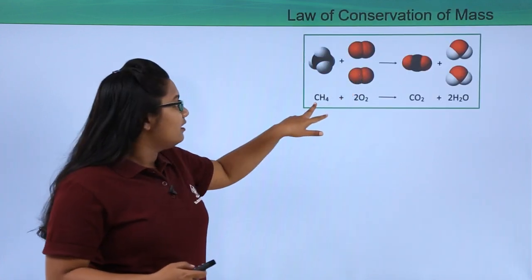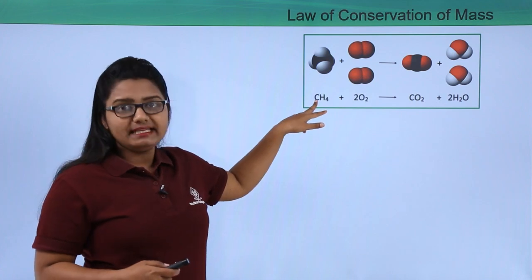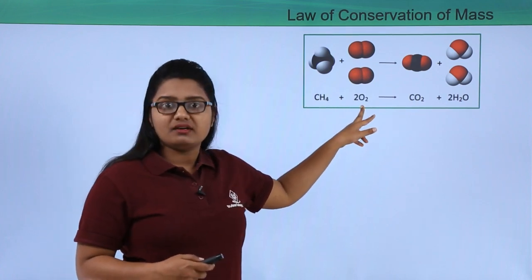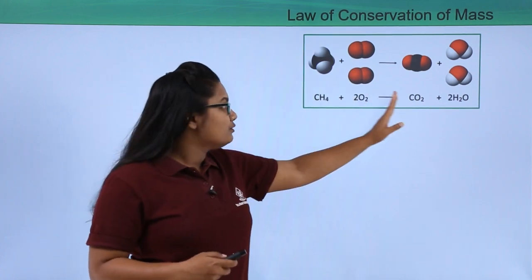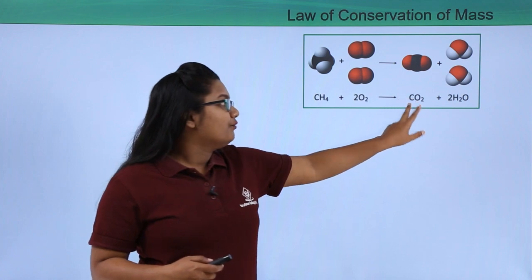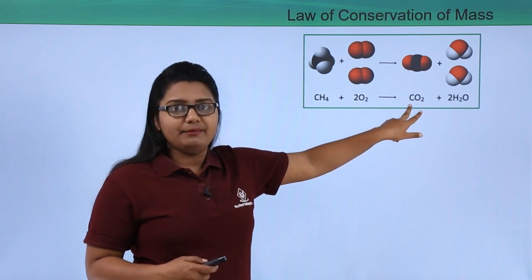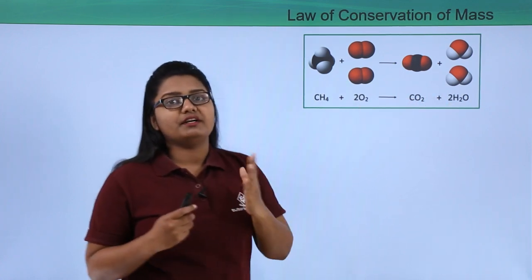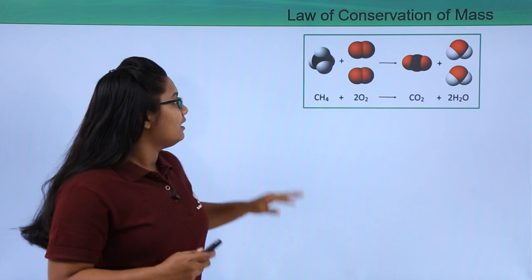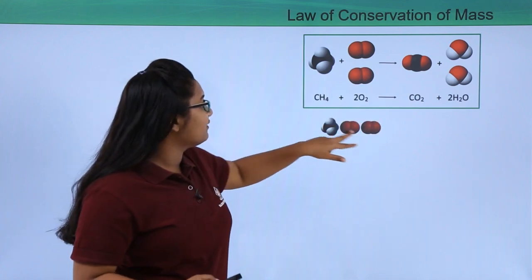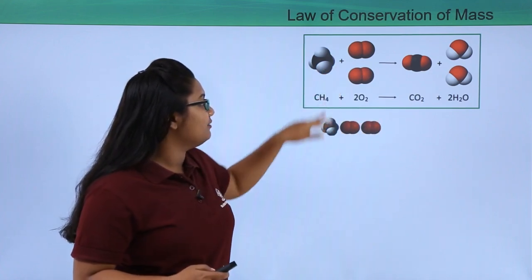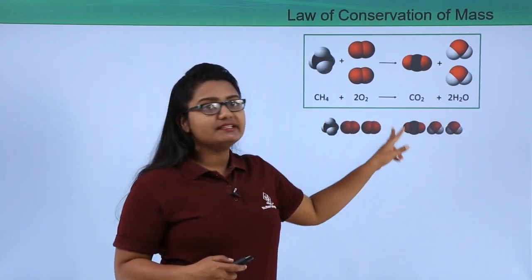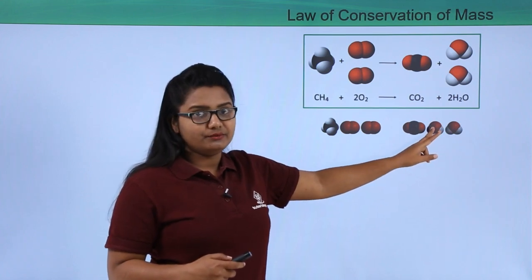In this chemical reaction, one molecule of methane reacts with two molecules of oxygen to yield one molecule of carbon dioxide and two molecules of water. These are the reactants, and carbon dioxide and water are the products.